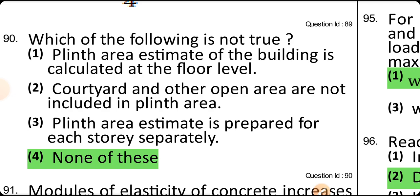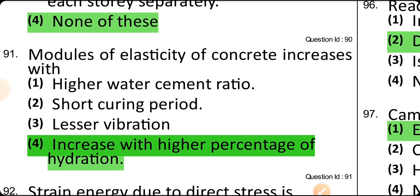Which of the following is not true? Plinth area estimate is calculated at floor level — correct. Courtyards and open areas are not included in plinth area — correct. Plinth area estimate is prepared for each story separately. None of these is the right answer.